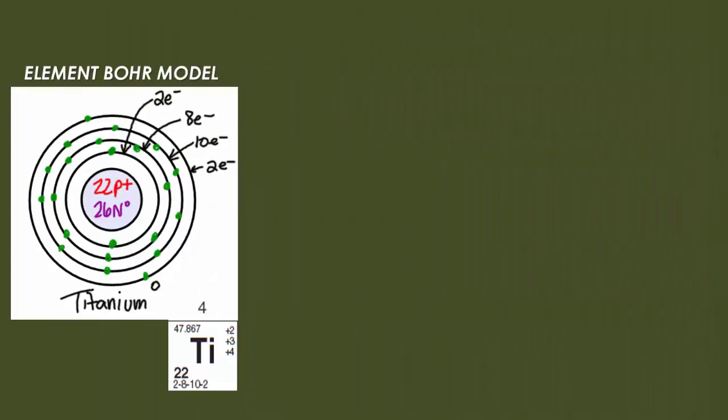It loses a whole layer. So here's our element Bohr model. That means titanium, the element, is neutral. So you have the configuration of 2, 8, 10, 2, noticing with both the dots and the actual numbers on each line.